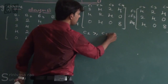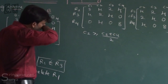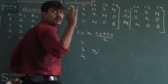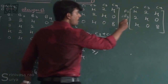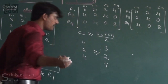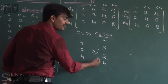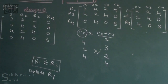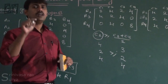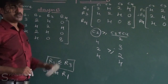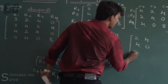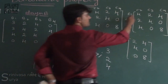Now checking column combinations. C2 ≥ (C3 + C4)/2: C2 is (4, 2, 4); (C3+C4)/2 = (3, 2, 4). We check: 4 ≥ 3 — yes; 2 equals 2 — yes; 4 equals 4 — yes. So C2 ≥ (C3+C4)/2 is satisfied. Therefore C2 is deleted.